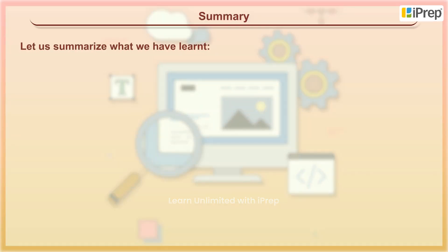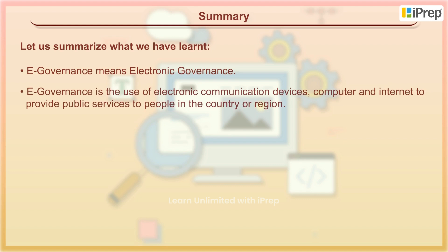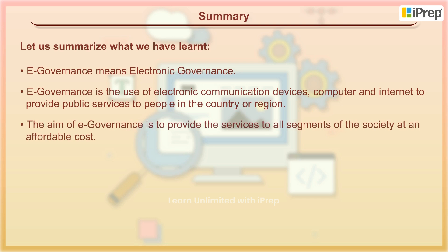Let us summarise what we have learnt. E-Governance means electronic governance. E-Governance is the use of electronic communication devices, computers, and internet to provide public services to people in the country or region. The aim of E-Governance is to provide the services to all segments of the society at an affordable cost.